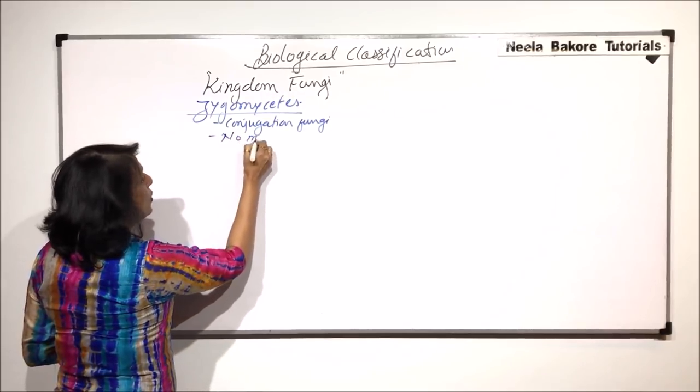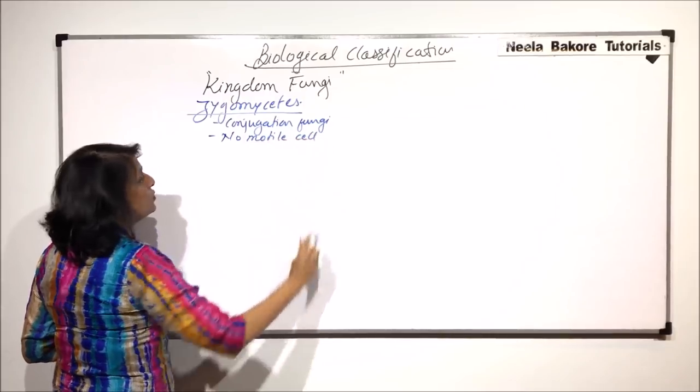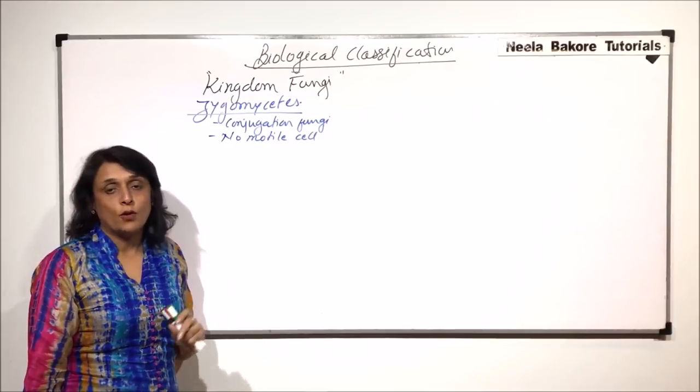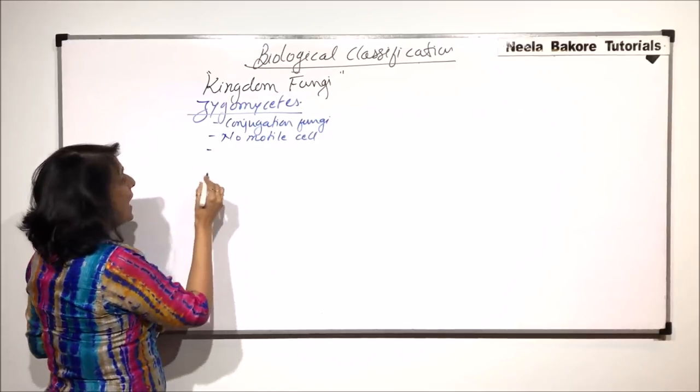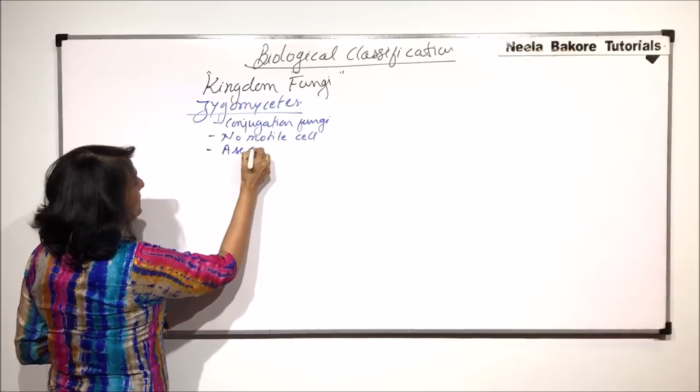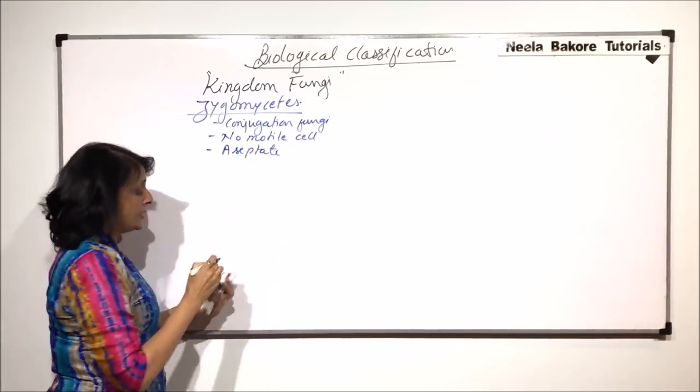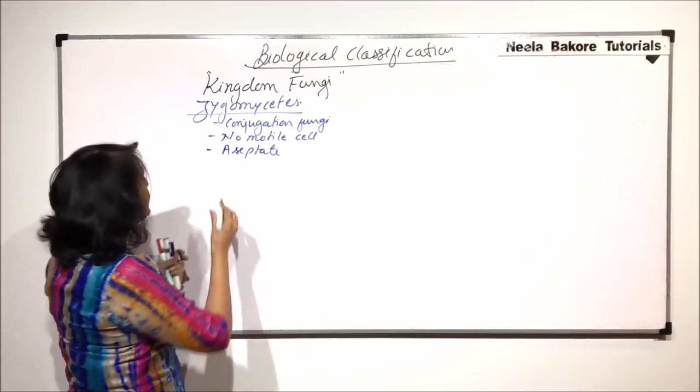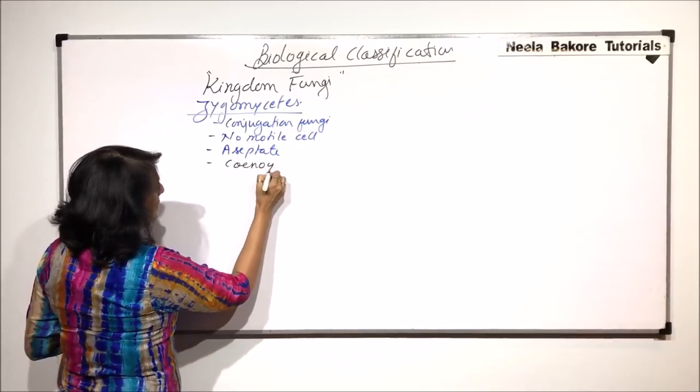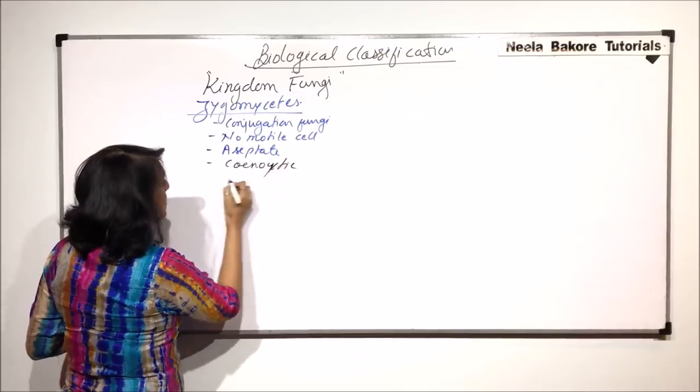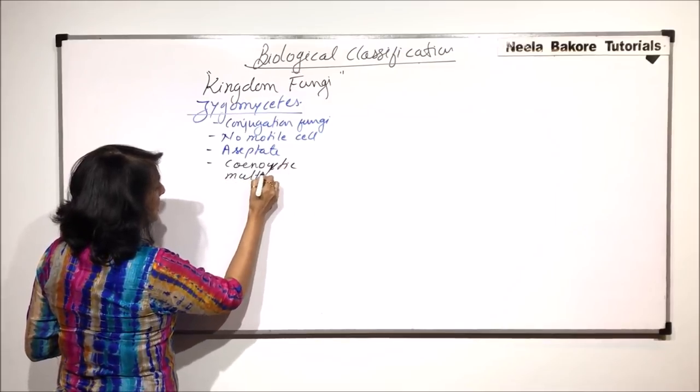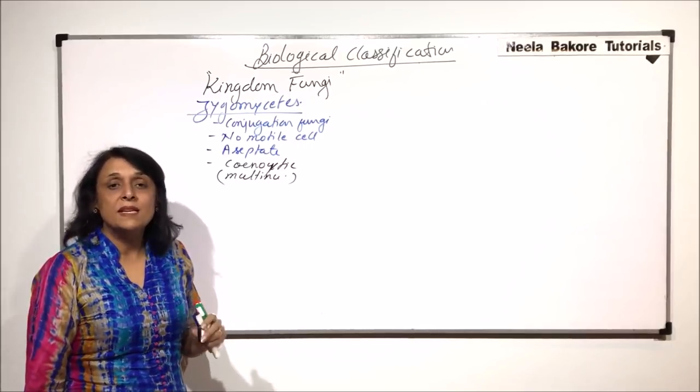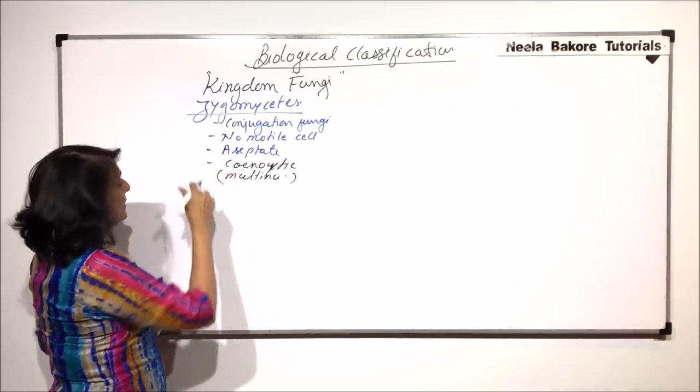In case of zygomycetes, there is no motile cell, that means no cell is going to have any cilia or flagella for locomotion. The hyphae are aseptate and because of this condition, they look multinucleate which is known as cenocytic. Cenocytic is multinucleate and they appear multinucleate because those septa are missing or absent.